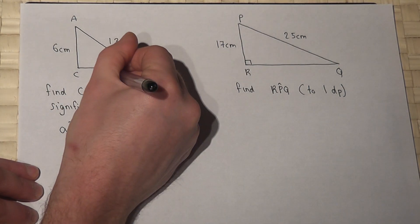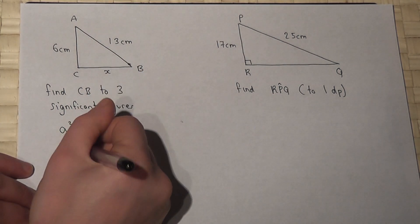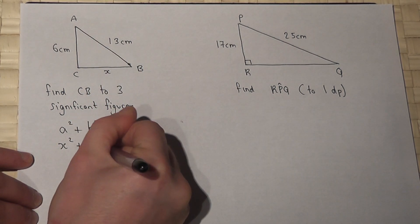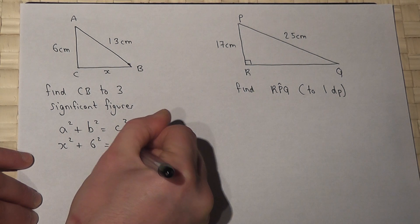So if I call that x, the length CB, then x squared plus 6 squared equals 13 squared.